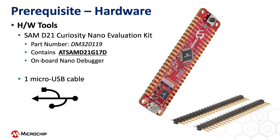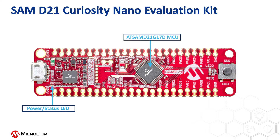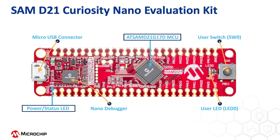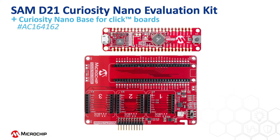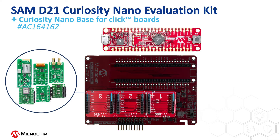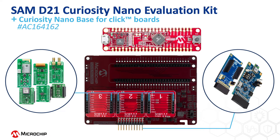This project is based on the SAM D21, our Cortex M0 Plus microcontroller. For this video, we will use the SAM D21 Curiosity Nano Evaluation Kit that contains the AT-SAM D21G17D microcontroller. The board includes a user LED to show application status, a user switch to read user inputs, a micro USB connector to connect with a PC, and an onboard nano debugger for programming and debugging the MCU. This onboard debugger also acts as a virtual COM port. Users can extend the board using the Curiosity Nano Base for click boards, which helps connect Curiosity Nano Kits with extension boards like Microbus Click Modules and Xpro extension boards.